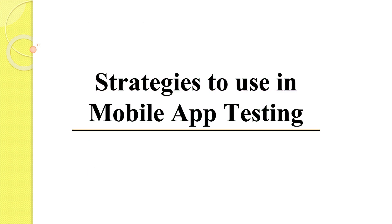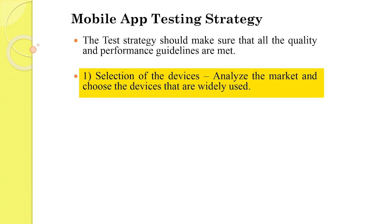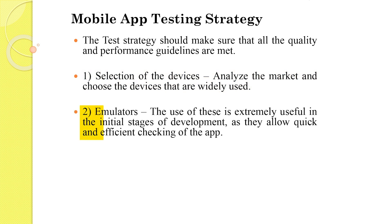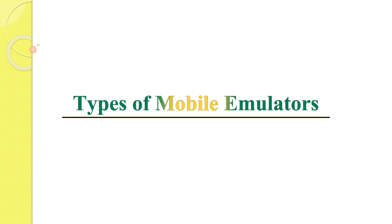We have to follow different strategies when doing mobile app testing. First, we have to select the device — analyze the market and choose the right device the client intends to test on. If we don't have real devices, we can use emulators. An emulator is a system that runs software from one environment to another without changing the software itself — it duplicates the features and works of real systems, so we can test on emulators as well.